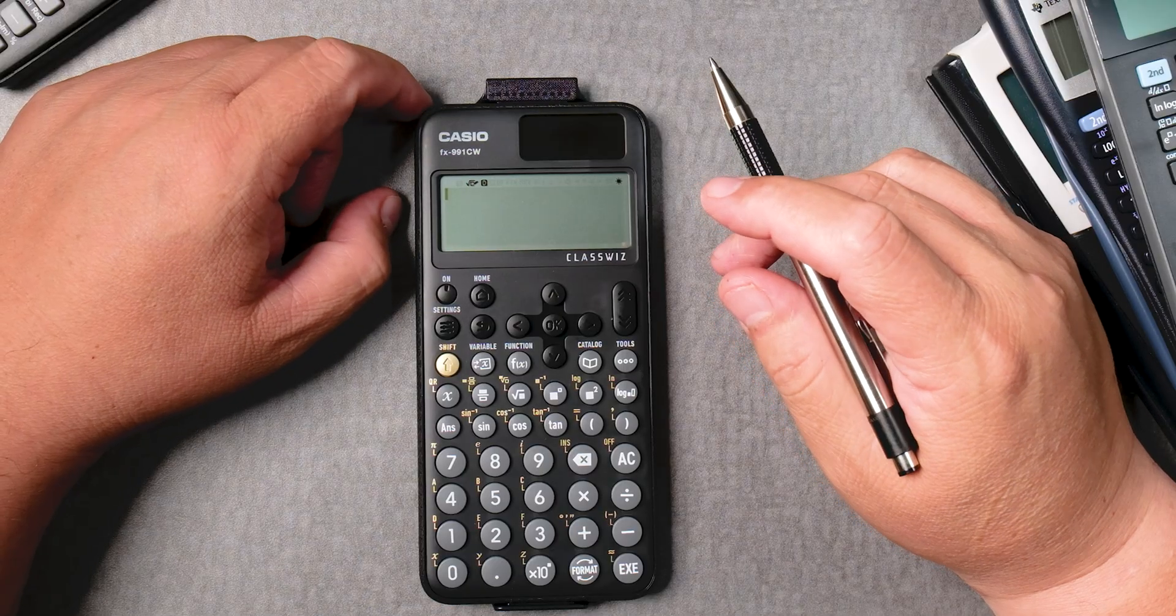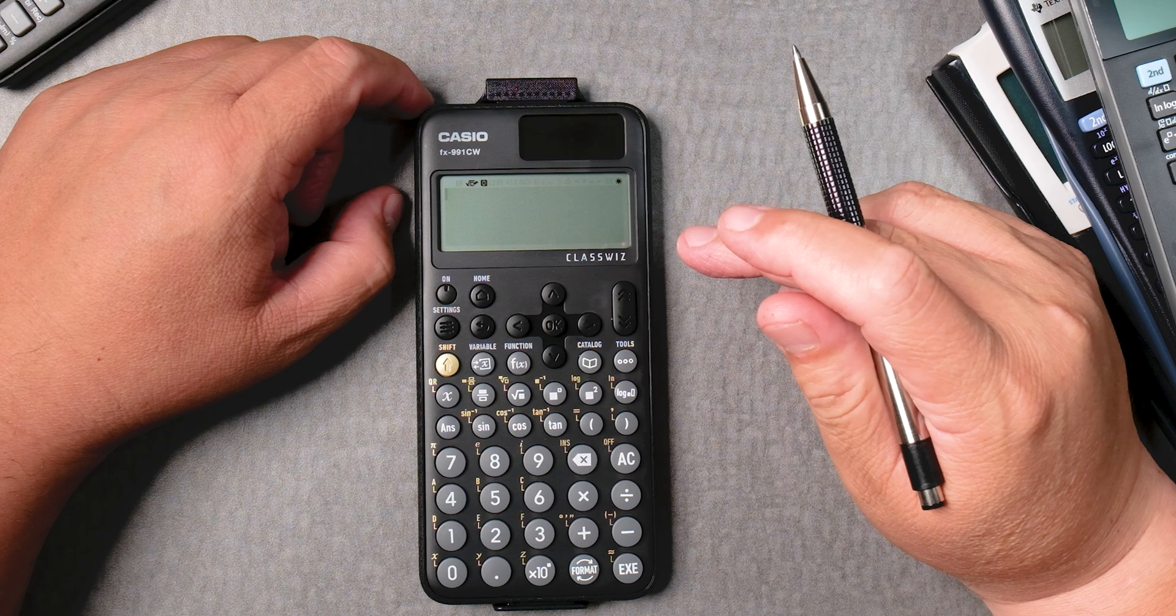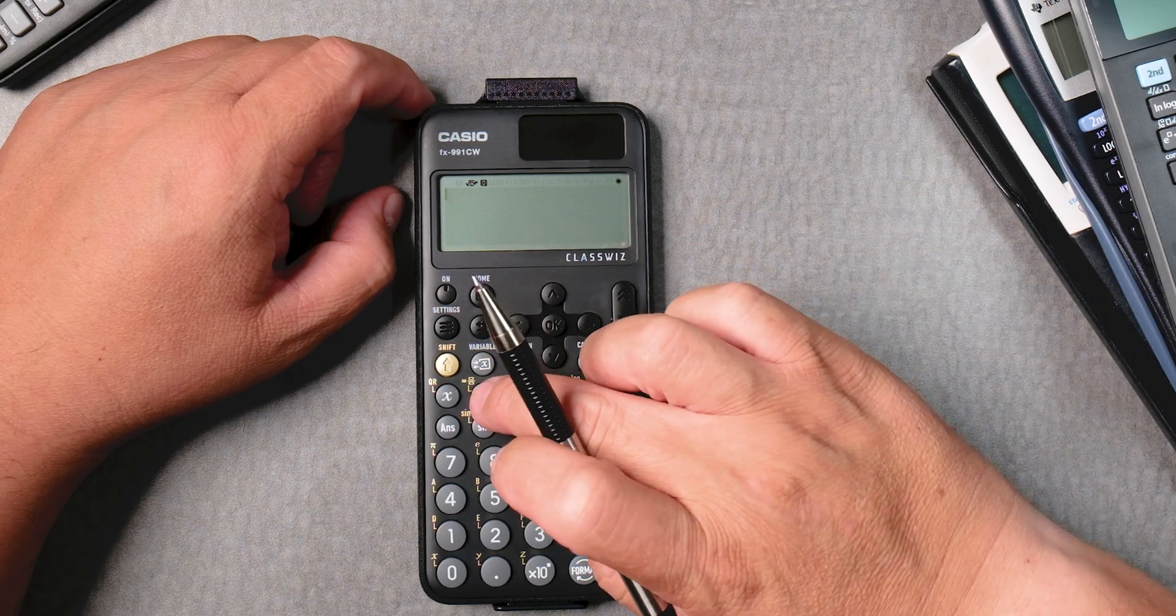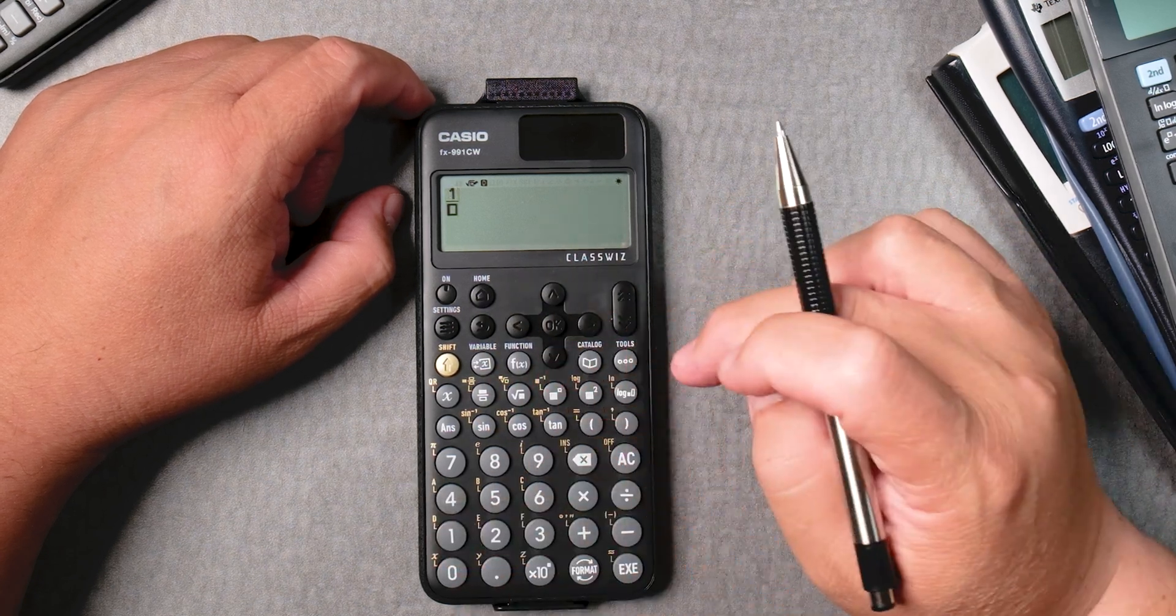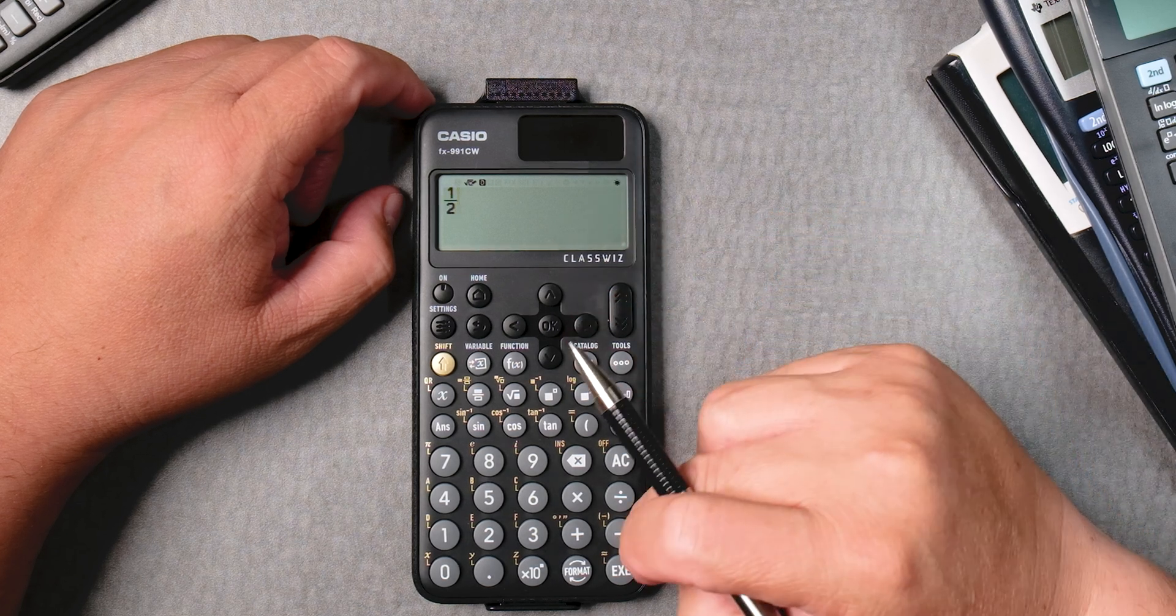Let's say I want to add a half plus three over four. We can use the fraction button, one, go down, two, bring it over, plus.